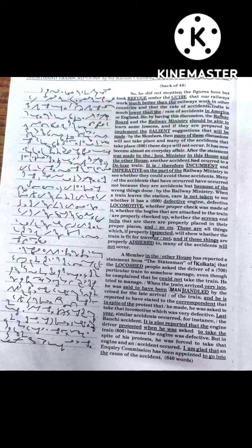A member in the other house has reported a statement from the Statesman of Kolkata that the Lokushed people asked the driver of a particular train to somehow manage even though he complained that he could not take the train. He tried to manage. When the train arrived very late, he was said to have been manhandled by the crowd for the late arrival of the train and he is reported to have stated to the correspondent that in spite of the protest that he made, he was asked to take that locomotive which was very defective.